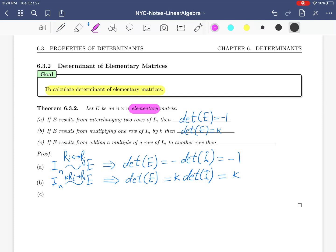Part C: If E results from adding a multiple of a row of I to another row, then the determinant of E is 1.